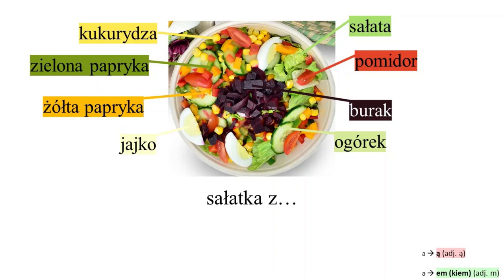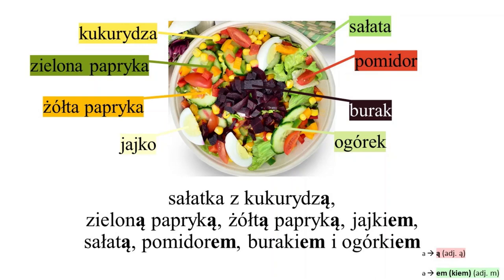Kukurydza, zielona papryka, żółta papryka, jajko, sałata, pomidor, burak, ogórek. Sałatka z kukurydzą, zieloną papryką, żółtą papryką, jajkiem, sałatą, pomidorem, burakiem i ogórkiem.